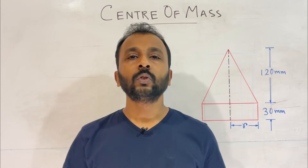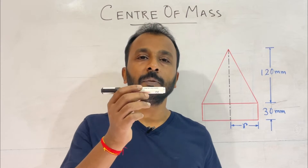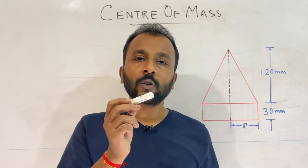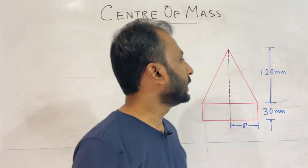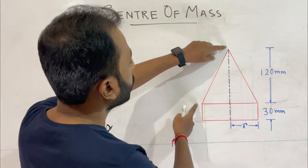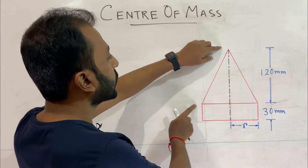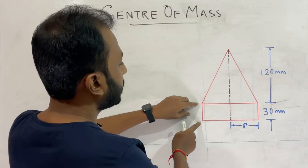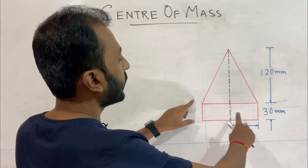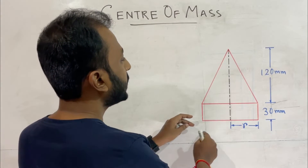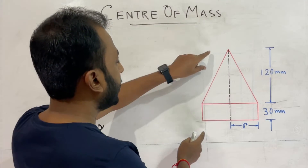I will help you solve this problem. The right circular cylinder has a height of 30 mm, and the cone has a height of 120 mm. This is the base where they are joined, and this is the radius and cross-sectional area at the base.